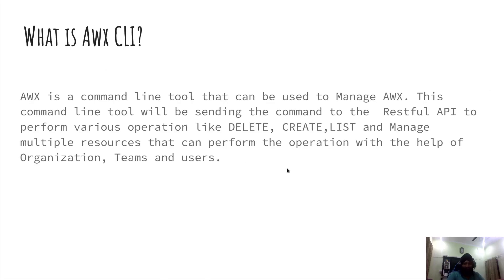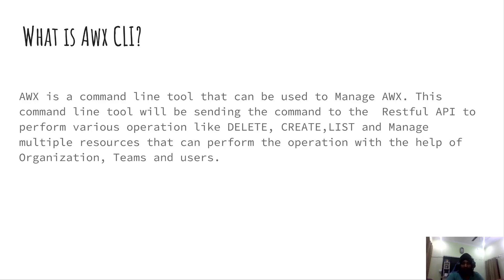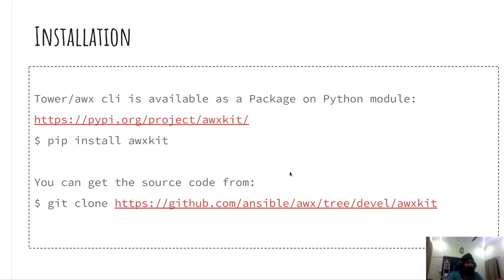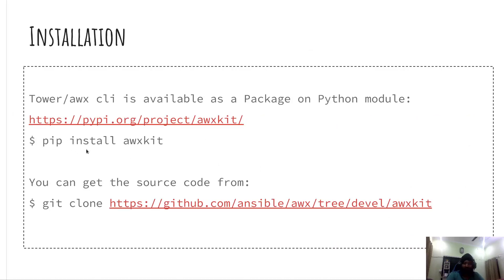AWX CLI is just a command line tool which is used to manage AWX resources. You can perform multiple operations on the API of AWX, related to delete, create, list, and launch any job template. All these operations will be performed on resources like jobs, job templates, projects, credentials, inventory, organizations, teams, and users.